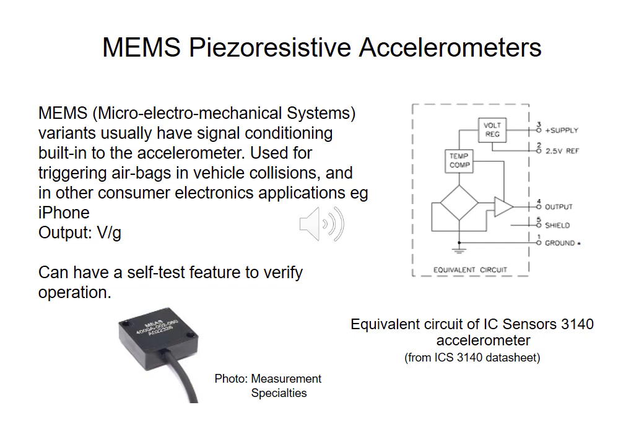MEMS piezoresistive accelerometers operate on the same principle — a mass attached to a beam — but the entire unit is etched into silicon on a chip known as a micro-electromechanical system. This makes them very compact and suitable for incorporation into electronic devices such as smartphones, providing X, Y, and Z acceleration measurements. They are also mounted in vehicle airbags to detect shock, and their output is in volts per g.